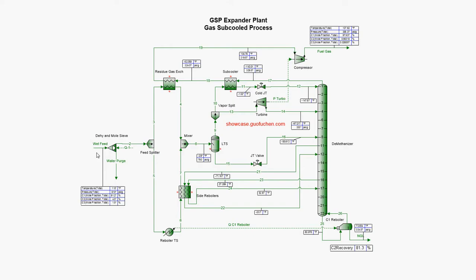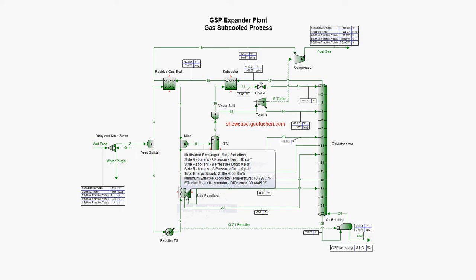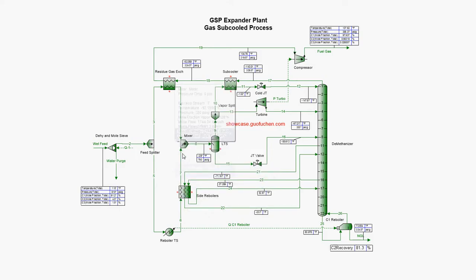The wet natural gas is first dehydrated in the mol sieve to remove water, to prevent ice formation in cryogenic conditions. Part of the feed is pre-cooled in the residual gas exchanger. The other part first goes through the C1 reboiler, then the side reboilers, and then mixes with the first portion at a temperature of negative 28°F.